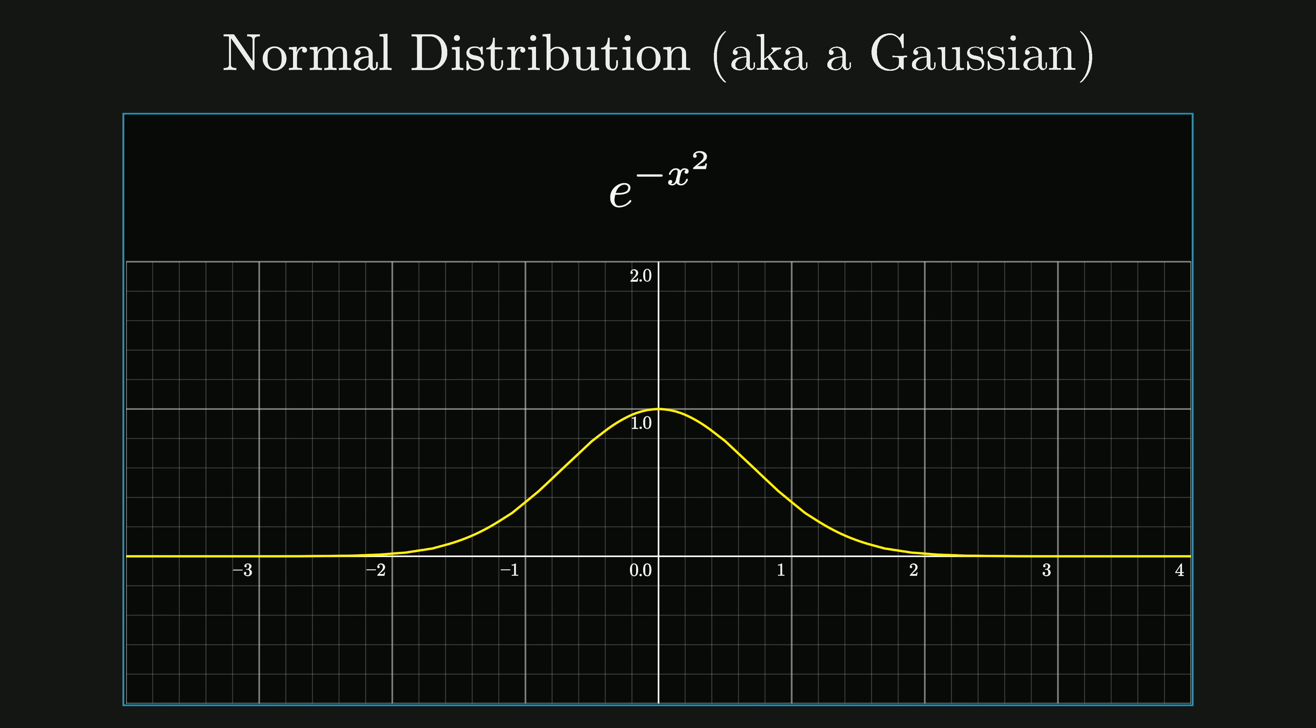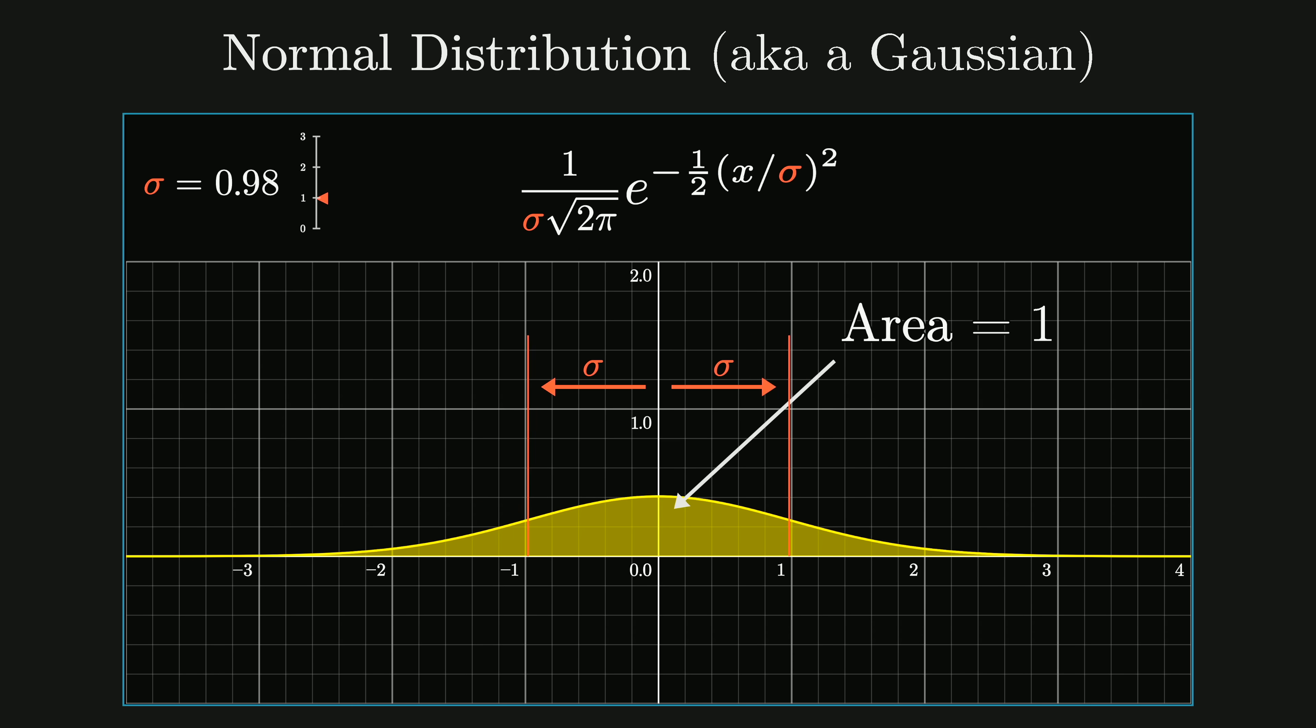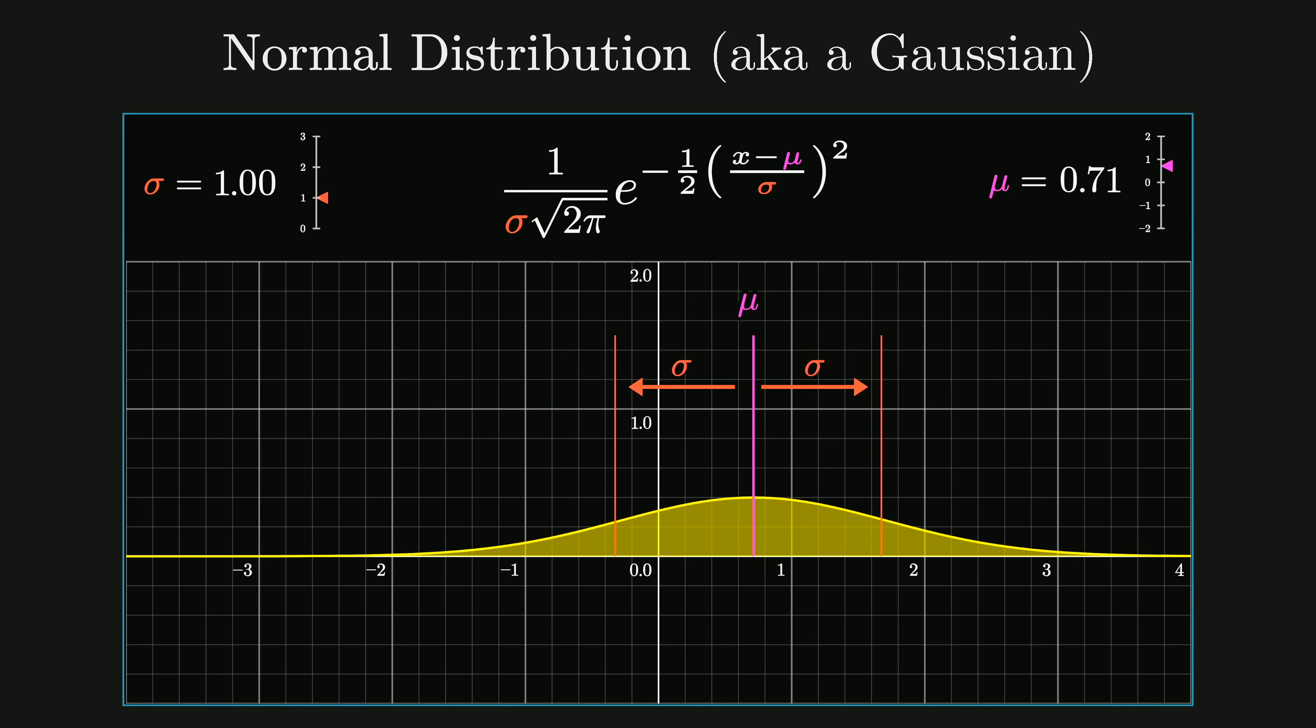The full formula for a Gaussian is more complicated than just e to the negative x squared. The exponent is typically written as negative one half times x divided by sigma squared, where sigma describes the spread of the distribution, specifically the standard deviation. All of this needs to be multiplied by a fraction on the front, which is there to make sure that the area under the curve is 1, making it a valid probability distribution. And if you want to consider distributions that aren't necessarily centered at 0, you would also throw another parameter, mu, into the exponent like this. Although for everything we'll be doing here, we just consider centered distributions.